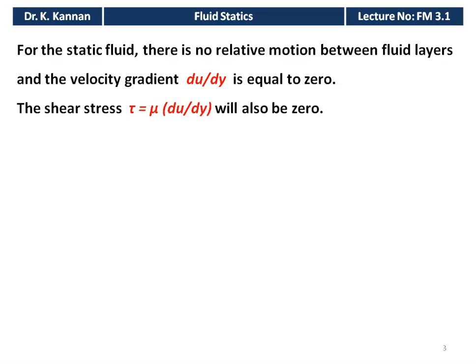For fluid statics, there is no relative motion between the fluid layers. The fluid is static — like water in a bucket, water in a tank, water in a dam or lake. For static fluid, the velocity gradient du/dy is equal to zero, meaning the fluid layers are not moving.